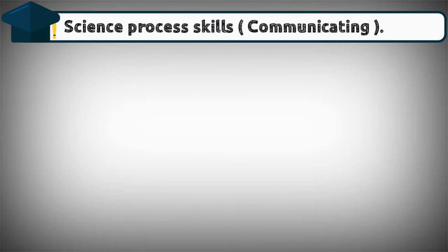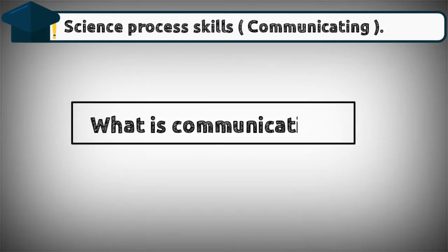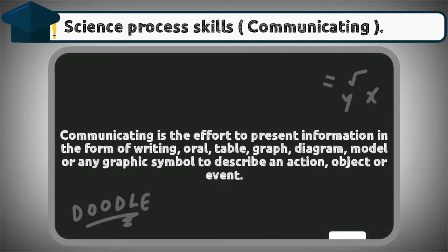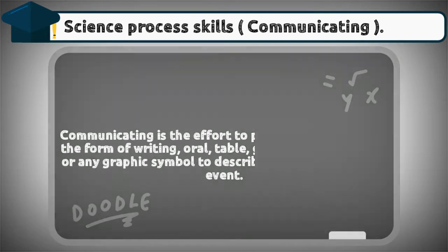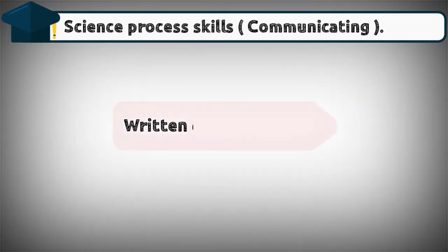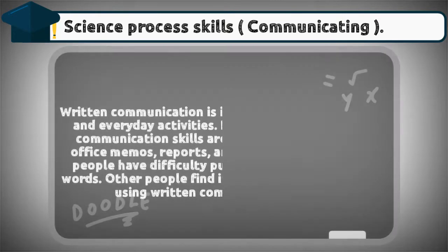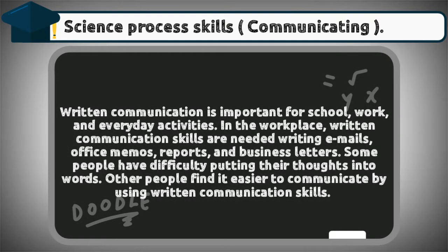Science process skills: communicating. What is communicating? Communicating is the effort to present information in the form of writing, oral, table, graph, diagram, model, or any graphic symbol to describe an action, object, or event.